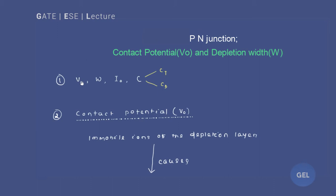First is contact potential and the formulas associated with it, then the formula for depletion width, then the reverse saturation current I₀ — the current we get in a reverse biased case due to drift current, which we covered in the previous lecture. Then the special cases of reverse saturation and finally, transition capacitance, also called depletion capacitance. These four terminologies are what we are going to study.